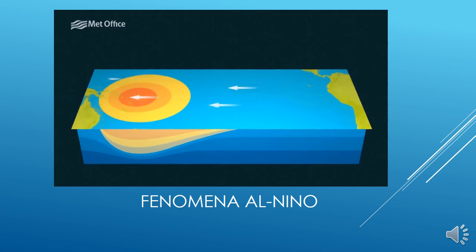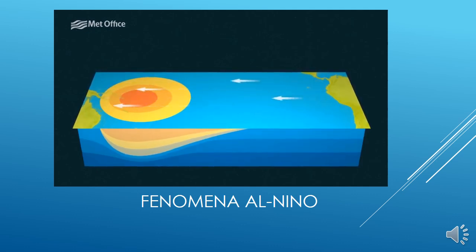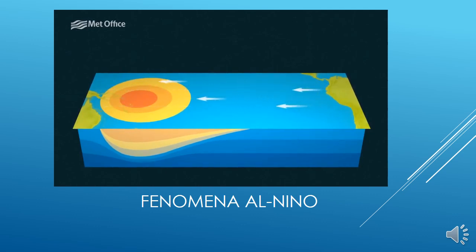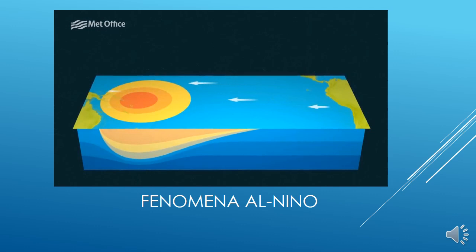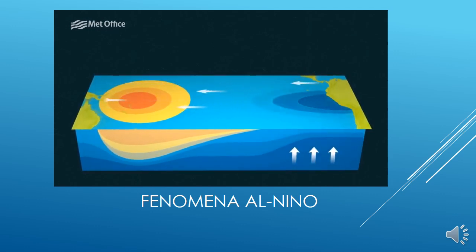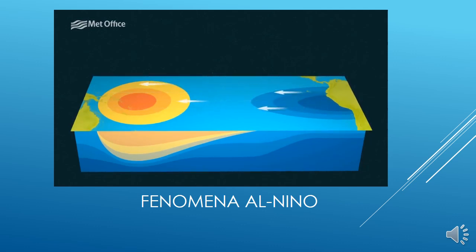These winds push warm water near the surface in their direction of travel, so the warm water piles up on the western side of the ocean around Asia and Australasia. On the other side of the ocean, around South and Central America, as the warmer water gets pushed away from the coast, it's replaced by cold water which is pulled up from deeper down in the ocean, a process called upwelling. This creates a temperature difference across the tropical Pacific, with warmer water piled up in the west and cooler water in the east.